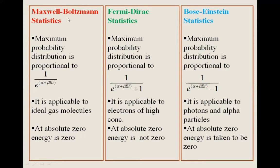MB statistics is applicable to ideal gas molecules. Fermi-Dirac statistics is applicable to electrons of high concentration. Bose-Einstein statistics is applicable to photons and alpha particles.